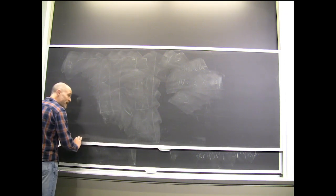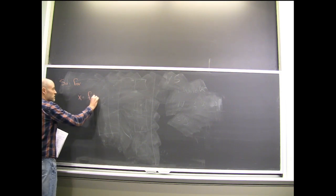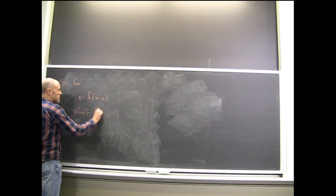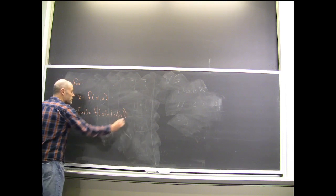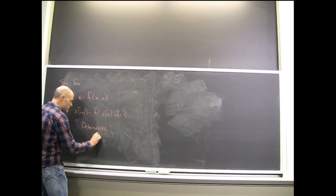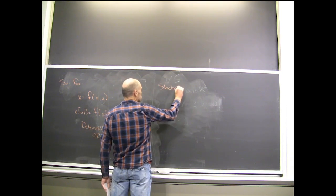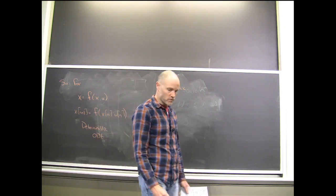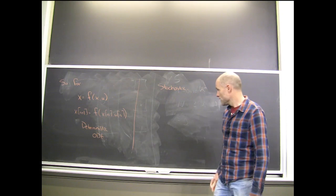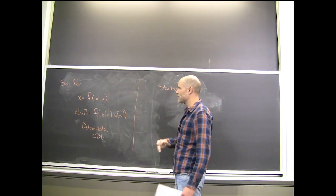So far throughout the class, we've basically been working with systems of the form — maybe time dependent — or discrete time systems. These are the deterministic models: ordinary differential or difference equations. The question is, what does the stochastic version of this look like? Do we have to throw out everything we've learned and start over with completely new notation? With actually very minor change, we can take all of our systems and start thinking about the stochastic equivalent of them.